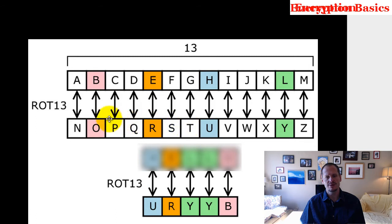One, two, three, four, five, six, seven, eight, nine, ten, eleven, twelve, thirteen. One, two, three, four, five, six, seven, eight, nine, ten, eleven, twelve, thirteen. So H is 13 characters away from U.